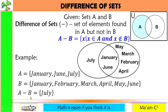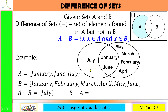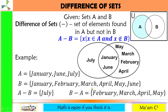So A minus B is equal to {July}. Now what if we want B minus A? That means the elements found in set B but not in set A. Looking at the elements found only in set B but not in set A, those are February, March, April, and May. So B minus A equals {February, March, April, May}.